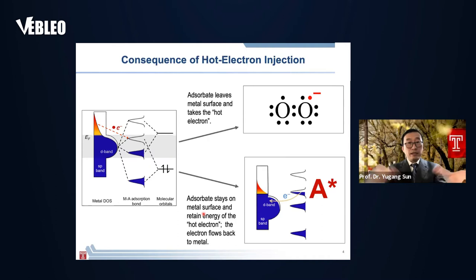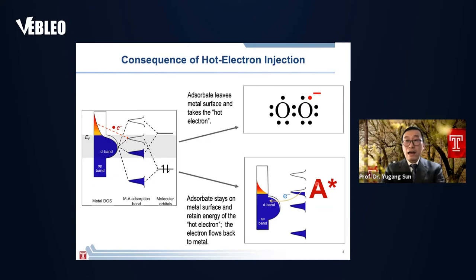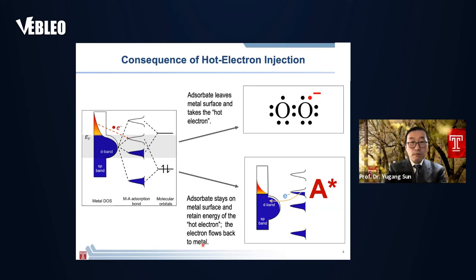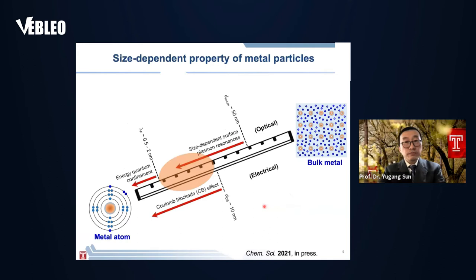In another scenario, the adsorbents stay on the metal surface. The injection of hot electrons into the empty antibonding orbitals elevates the energy of the adsorbing molecules, effectively weakening the chemical bond. This can facilitate the cleavage of chemical bonds and allow the desired chemical reactions to proceed. After that, the electrons can flow back to the metal to recombine with the holes.